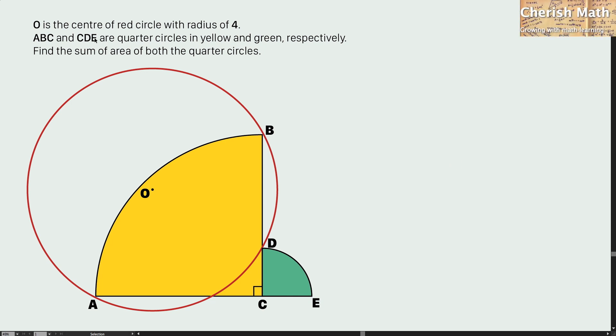Say hi from Cherish Math. This is the question. O is the center of a red circle with radius of 4. ABC and CDE are quarter circles in yellow and green, respectively. Find the sum of area of both the quarter circles.